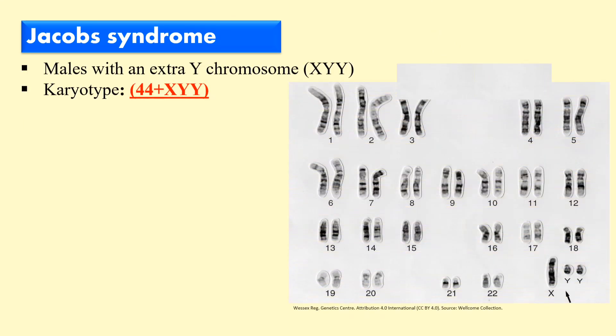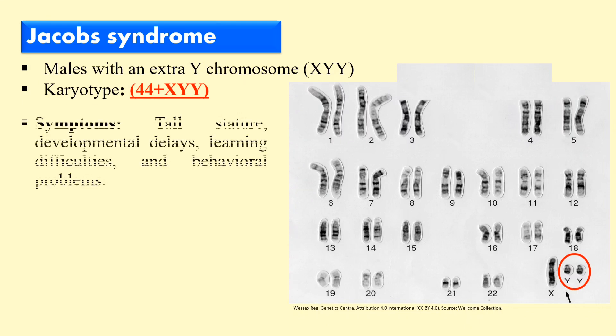Next is Jacob's syndrome, which occurs in males and involves one extra Y chromosome. The karyotype is 44 plus XYY. In the karyotype you can clearly see that this patient has two Y chromosomes, whereas a normal person has only one. Due to the presence of this extra Y chromosome, certain symptoms develop, such as tall stature, delay in development, learning difficulties, and changed behavioural patterns.